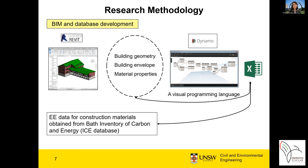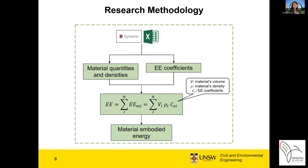We use the ICE database to get information about embodied energy for construction materials. For calculating embodied energy for a material, we only need to multiply the material's mass by its energy coefficient. Energy coefficients were obtained from the ICE database, and the mass of materials was derived from Revit by multiplying materials' volume by their densities. The calculations were done in the Dynamo environment.